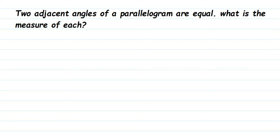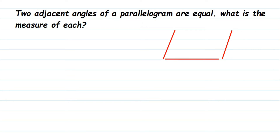Here's a question on parallelograms: two adjacent angles of a parallelogram are equal — what is the measure of each? Let me draw a parallelogram. Adjacent angles are those which share a common arm. If one angle is x, then the adjacent angle is also x. We assume these two adjacent angles are equal.